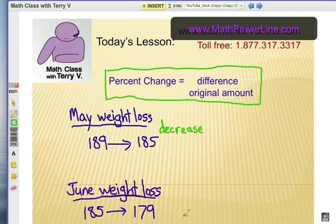Now, using this formula, you have the difference that you are trying to divide by the original amount. So in this case, the difference is four, four pounds. And as we talked previously, you always divide by the first number. Whether it's larger or smaller doesn't matter. So four compared to 189.